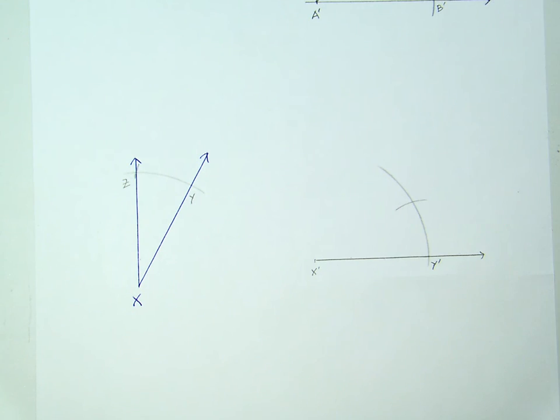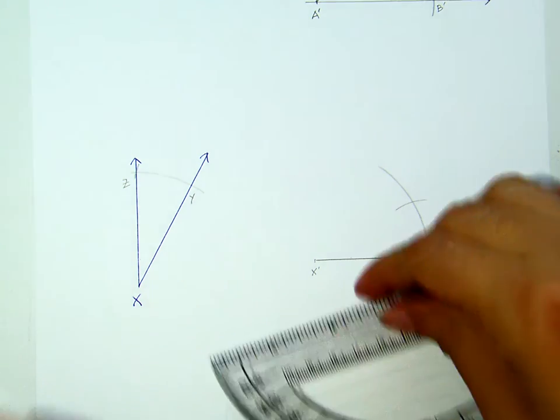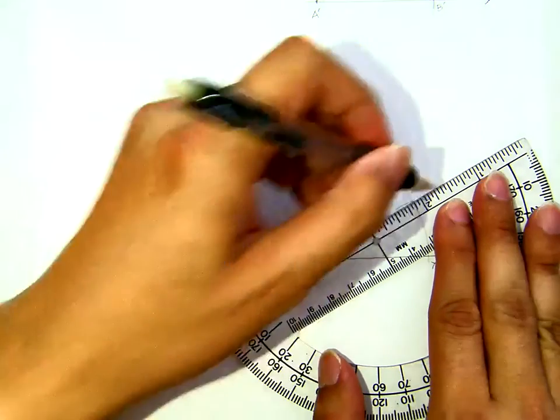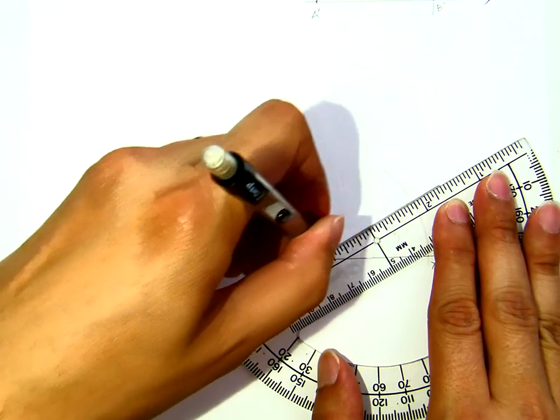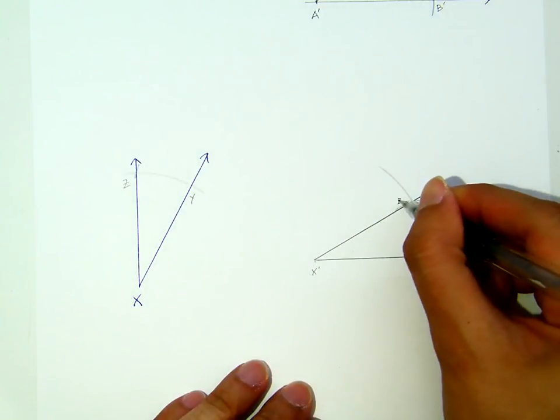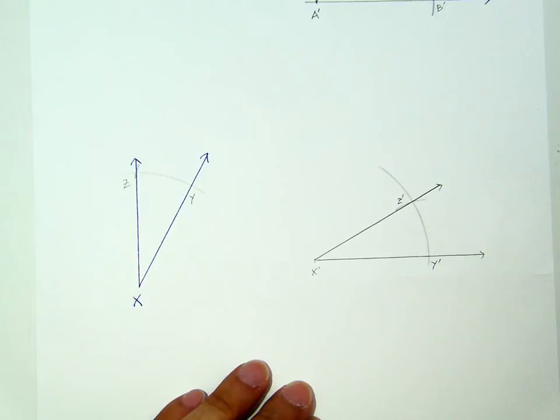The intersection there is our Z'. That's the one I will bring. This is my now, my Z'.